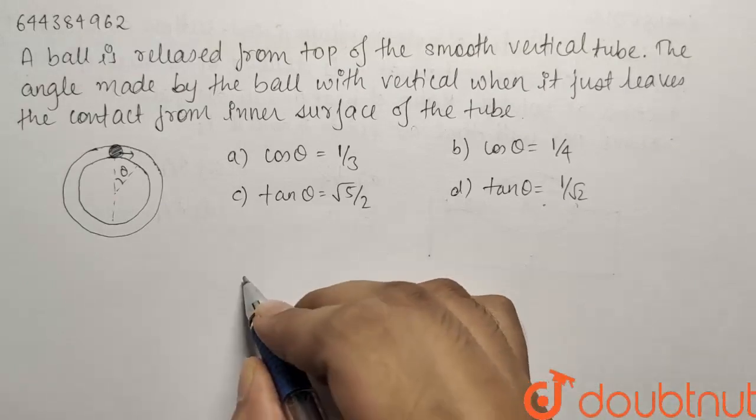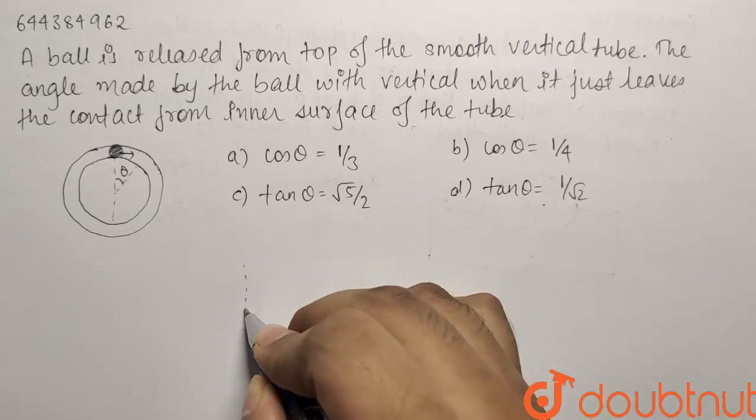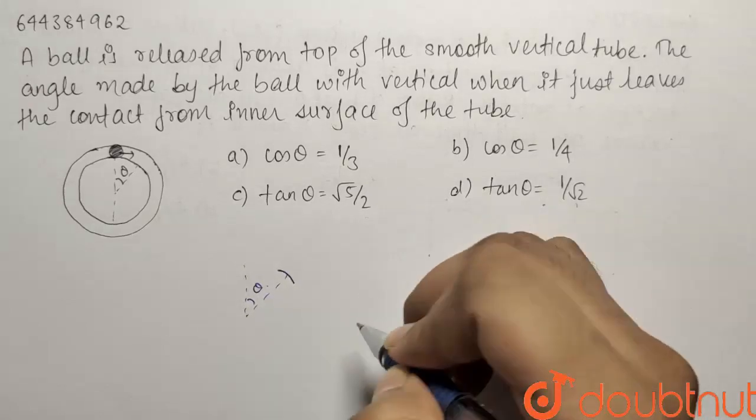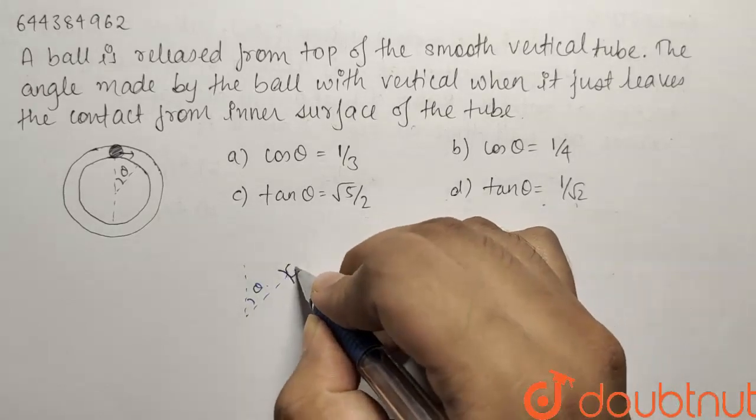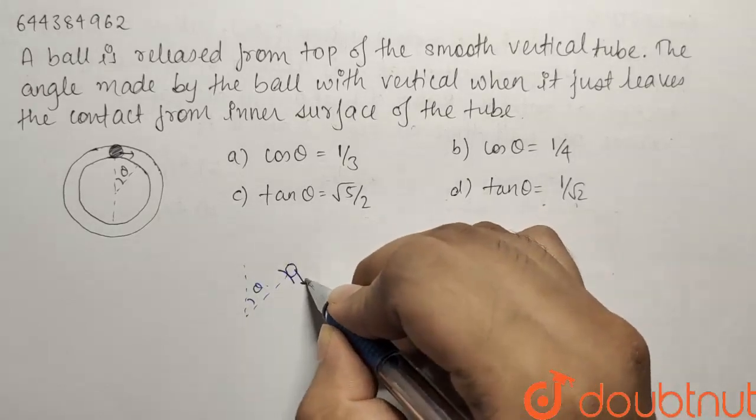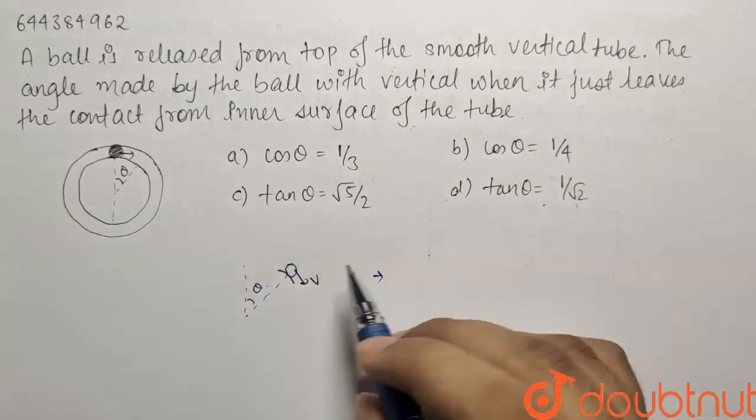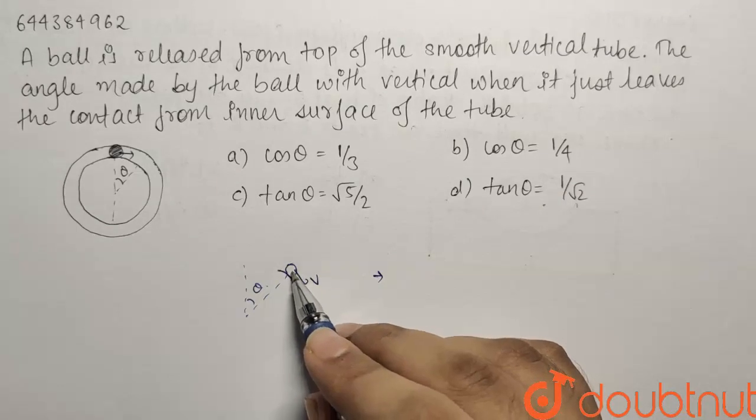Let us draw a figure after angle theta. If after angle theta it is leaving the inner surface, this is your inner surface. The ball will be having some velocity in the tangential direction. So what I can write is, if you write the force on this ball.